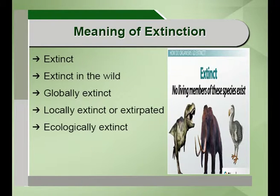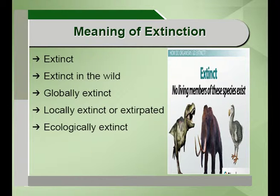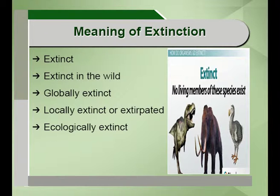What is the meaning of extinction? It can be categorized as: extinct, extinct in the wild, globally extinct, locally extinct or extirpated, or ecologically extinct. Extinct means a species which is not found on earth — which has disappeared, which has vanished, which is not available on earth now. There are a number of species which have become extinct.